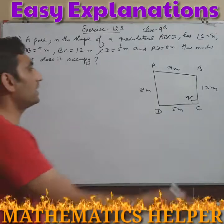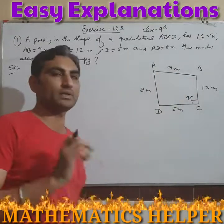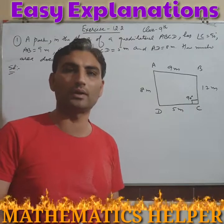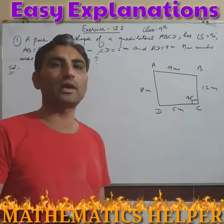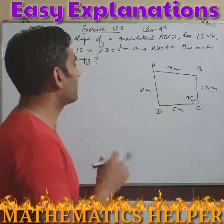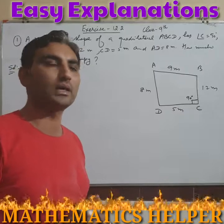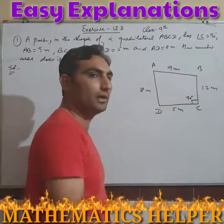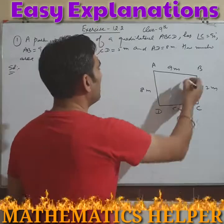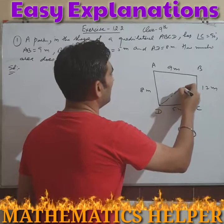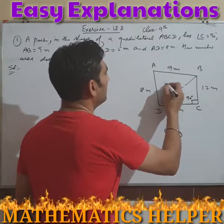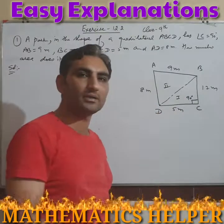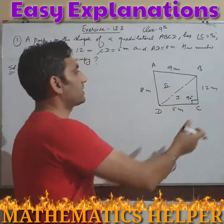Since there is no direct formula for the area of a quadrilateral, we divide it into two triangular shapes as discussed. If we use diagonal AC, there will be no role for the 90° angle, so we choose diagonal BD, joining B and D to divide the quadrilateral into two triangular shapes.